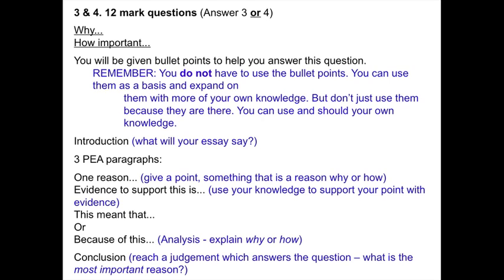Make sure you know what you're going to write about when you've read the question, and ignore the bullet points completely if you want to. You then need to write, possibly a short introduction for a 12 mark question, and three PEA paragraphs — Point, Evidence, Analysis. The analysis should be focused on the question, so explaining why or explaining how. You need to try and reach a judgement to answer the question in your conclusion — so the most important reason, some type of judgement.